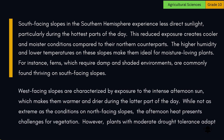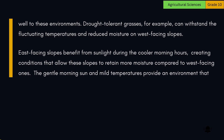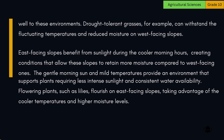West-facing slopes are characterized by exposure to intense afternoon sun, making them warmer and drier during the latter part of the day. While not as extreme as north-facing slopes, the afternoon heat presents challenges for vegetation; however, plants with moderate drought tolerance adapt well, such as drought-tolerant grasses that can withstand fluctuating temperatures and reduced moisture. East-facing slopes benefit from sunlight during the cooler morning hours, retaining more moisture compared to west-facing ones. The gentle morning sun and mild temperatures support plants requiring less intense sunlight and consistent water availability, such as flowering plants like lilies.